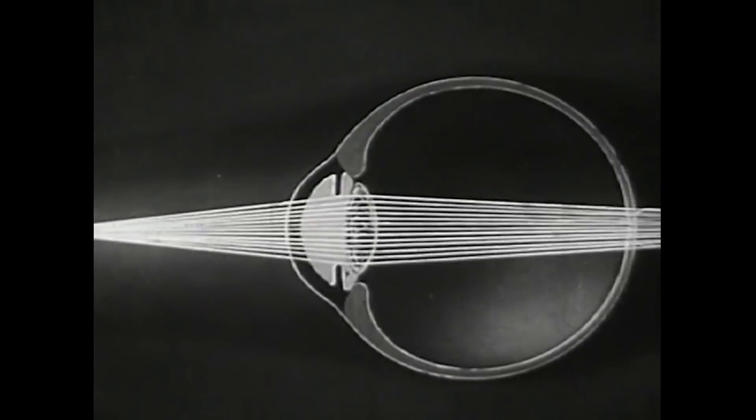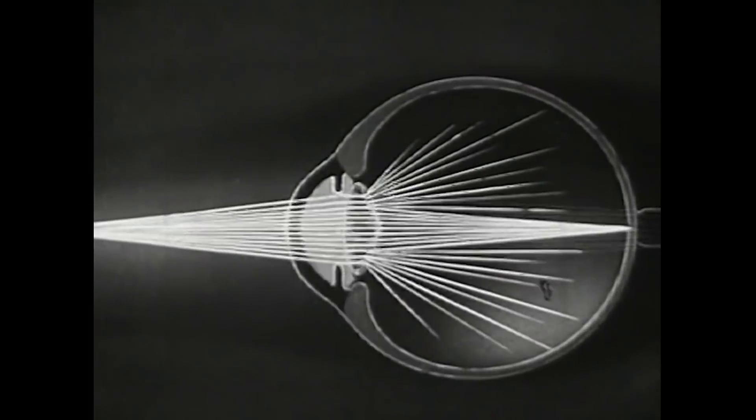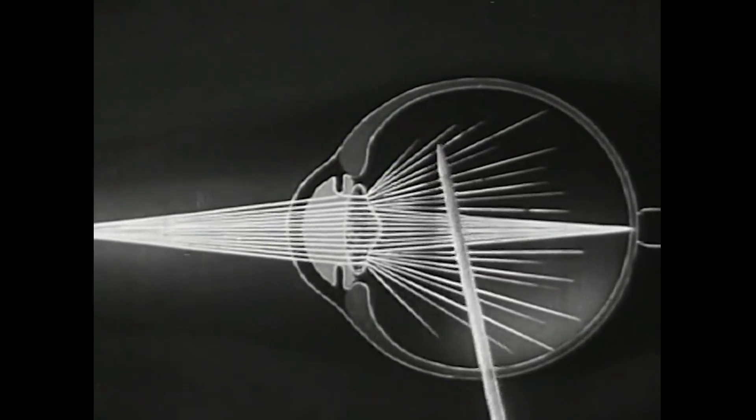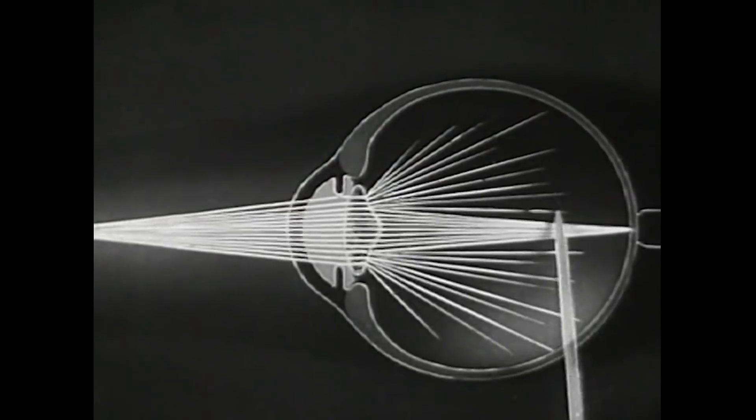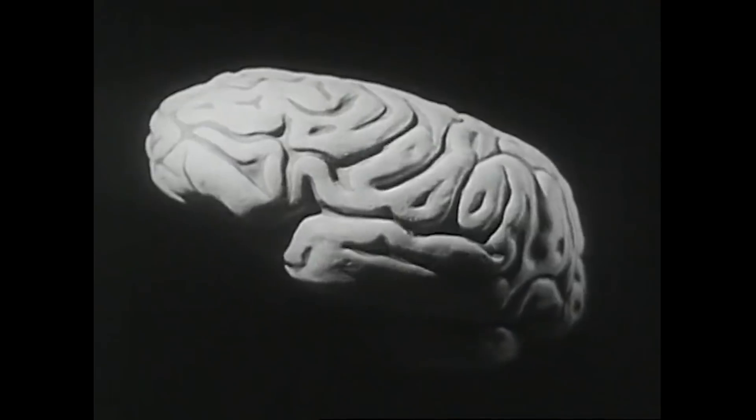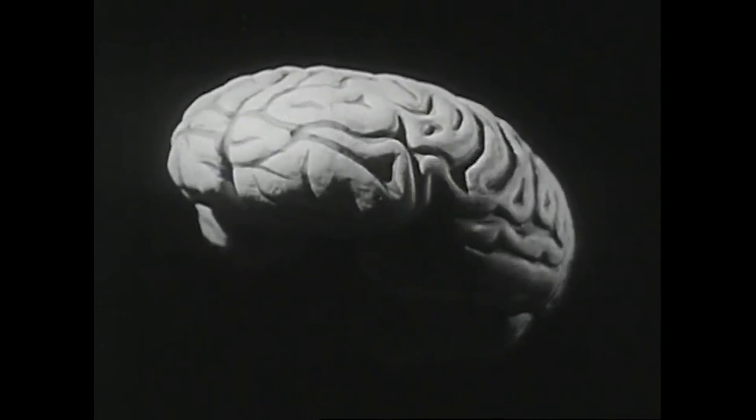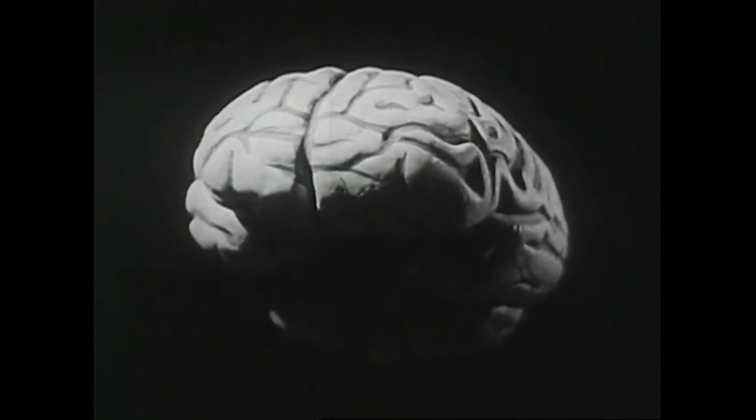The prevailing theory is that we have more neurons clustered at the center of our vision than at the outside. The lack of cells in our periphery renders us nearly blind to things far enough outside the center. To compensate, the brain takes its best guess at what's out there based on the more visible gray areas.